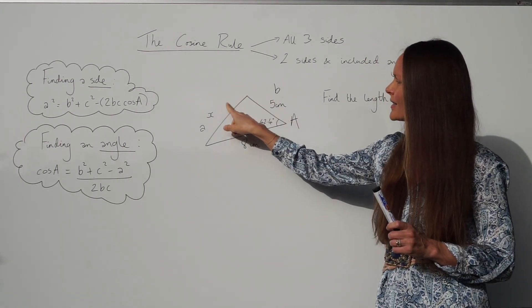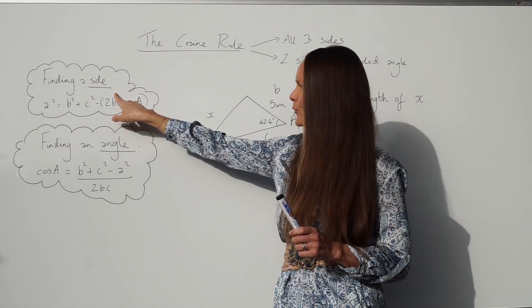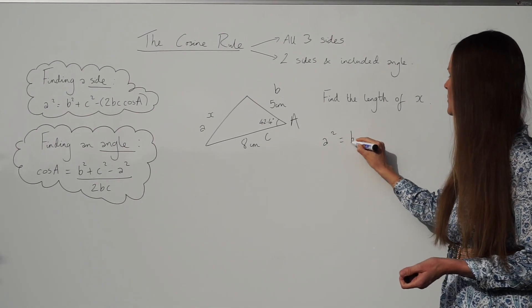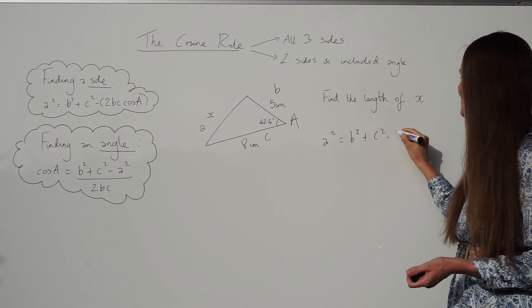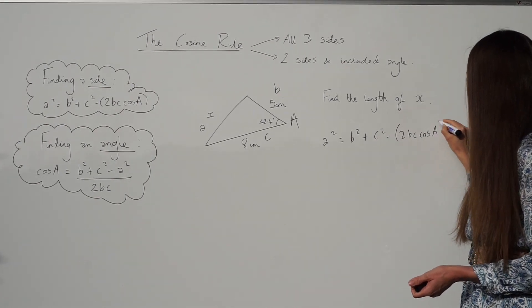So because we're finding a side, I'm going to use this version of the formula. Okay, so I'm going to start just by writing it down. So a² equals b² plus c² minus 2 times b times c times cos A.